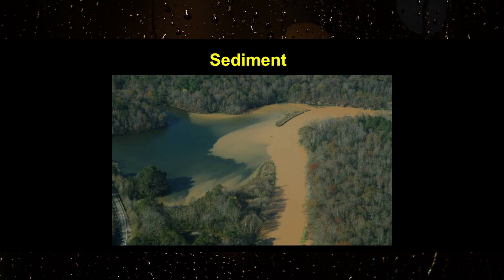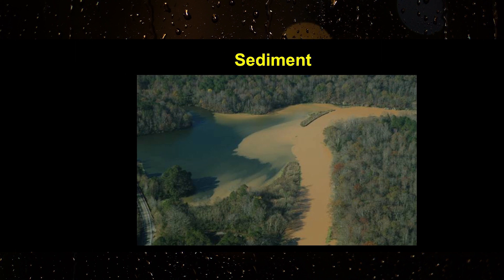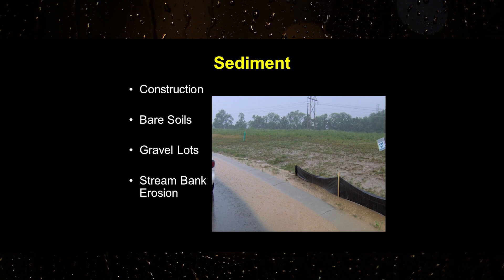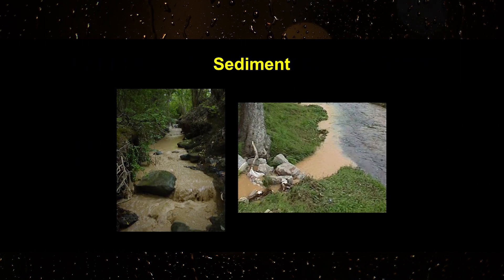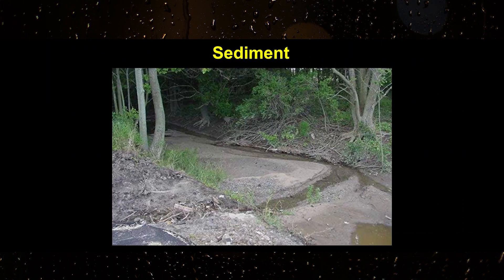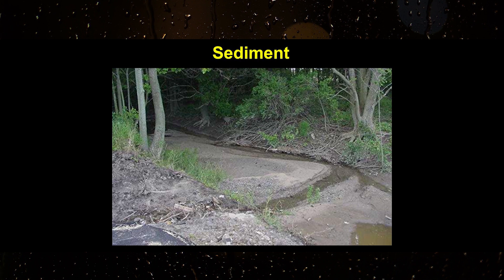Sediment is one of the most widespread pollutants in surface waters. Sediment that is suspended in the water causes it to appear cloudy or turbid. It is generated from construction activities, bare soil around a facility, gravel parking areas, and stream bank and stream bed erosion. Many pollutants such as nutrients, hydrocarbons, metals, and other toxic substances attach to sediment particles, particularly fine sediments such as clay. Therefore, as sediment is carried to a water body, it can carry other pollutants with it. Even without attached pollutants, sediment can be very destructive to aquatic systems by covering and damaging habitat.